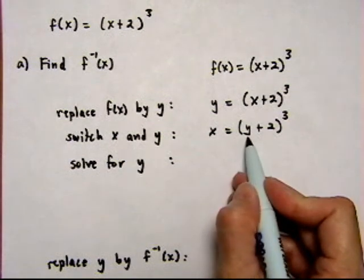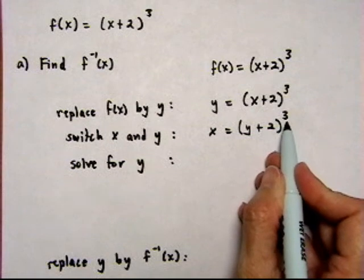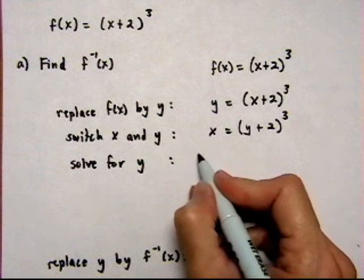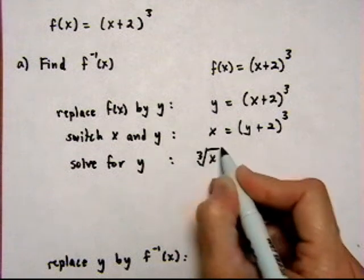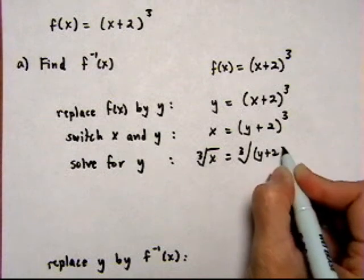Now to get y out of here, right now it's buried within this cubing. So if we want to get rid of the cubing so we can get the y out, we need to cube root both sides. So if I do cube root of x equals cube root of y plus 2 cubed.